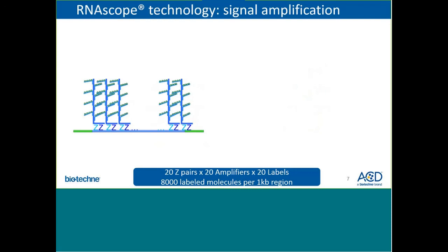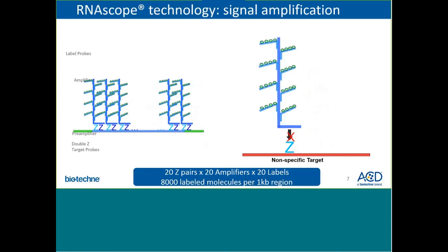However, if a Z probe binds to a non-specific target, it is unlikely for the adjacent Z probe to bind as well to form a preamplifier binding site, because of the lack of specificity of binding. As a result, the double Z probe design provides a highly sensitive and specific method for RNA transcript detection through signal amplification and suppression of background noise, as the recruitment of amplification to non-specific targets with only single Z probes is essentially very minimal within the context of the assay.